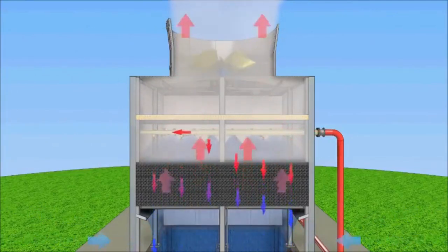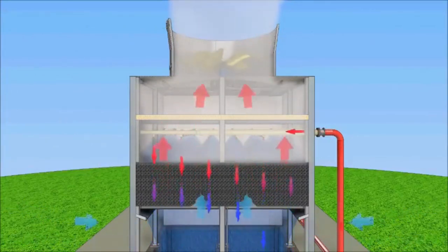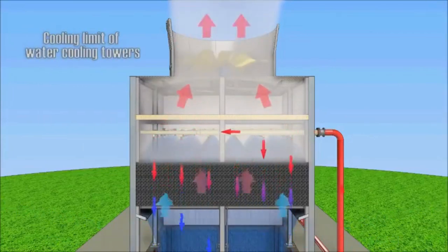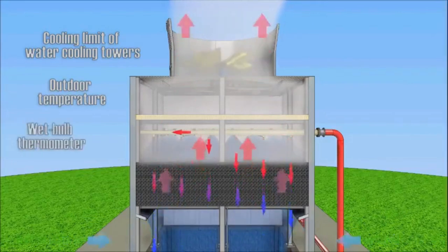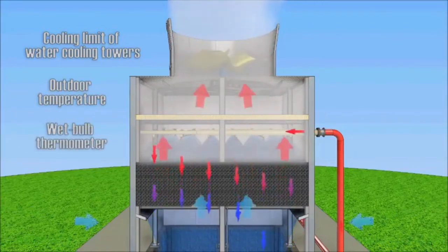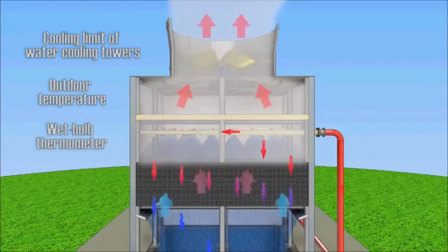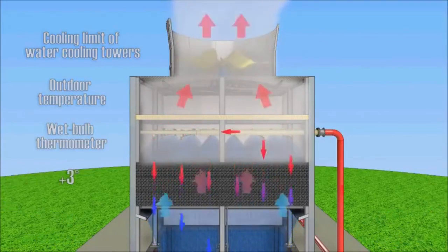Theoretically, the ideal limit of cooling water in the cooling tower is the temperature of the outside air wet bulb temperature. In practice, the limit of cooling is the temperature of the wet bulb thermometer plus 3 degrees Celsius.